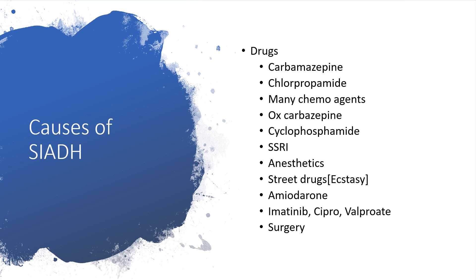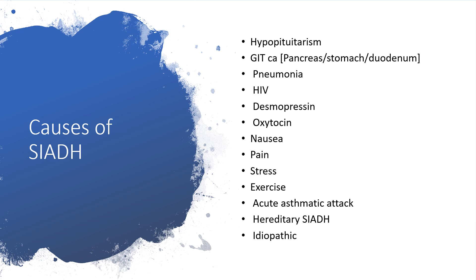Further medications include imatinib, ciprofloxacin — so just from treating a bacterial infection you can be dealing with SIADH — sodium valproate or valproic acid. Other causes include surgery, hypopituitarism, gastrointestinal tract carcinomas like pancreas, stomach, duodenal tumors, pneumonia, HIV infection, oxytocin, and desmopressin.